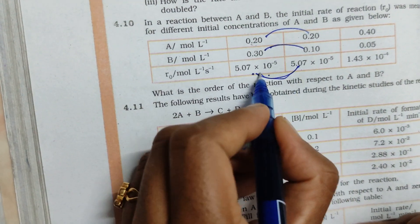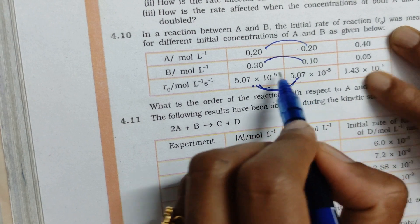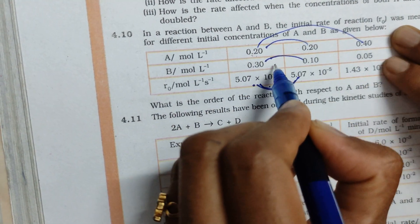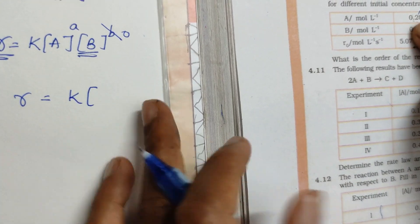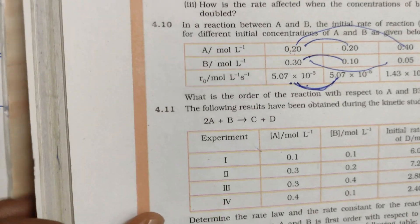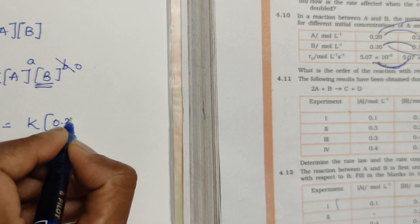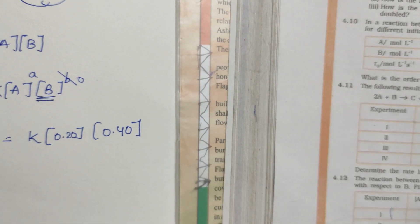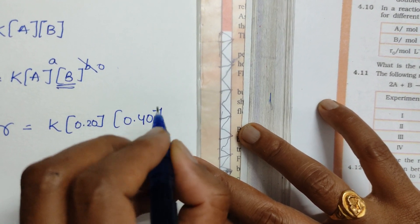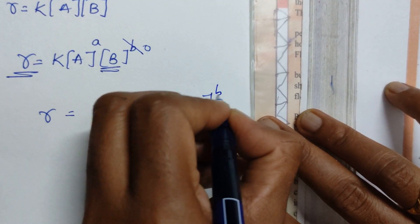You can find it out simply by seeing the constant value. For the next one, A value is changing and B value is also changing. I will substitute: rate is equal to k into concentration of A. Take a screenshot of the table. K value is 0.2, A value is 0.20, and B value given in the question is 0.30.